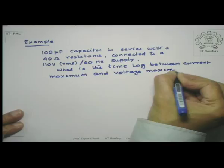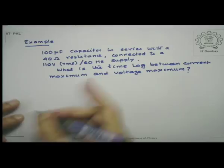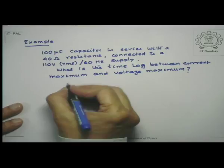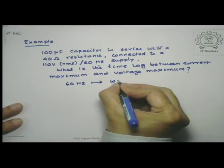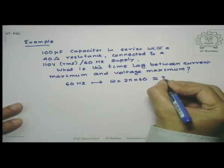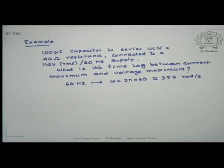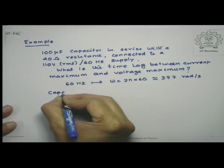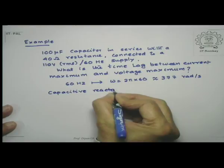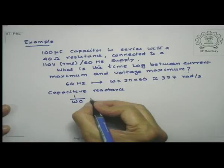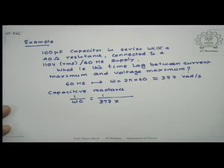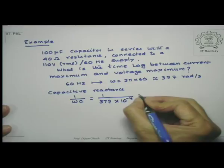First, since it is a 60 hertz supply, which is a linear frequency, 60 hertz corresponds to ω = 2π × 60, which is approximately equal to 377 radians per second. The capacitive reactance is Xc = 1/(ωC) = 1/(377 × 100×10⁻⁶ F), and that works out to about 26.5 ohms.